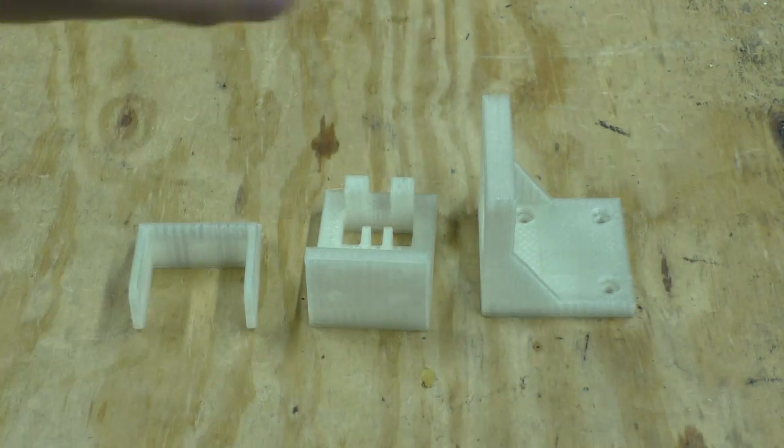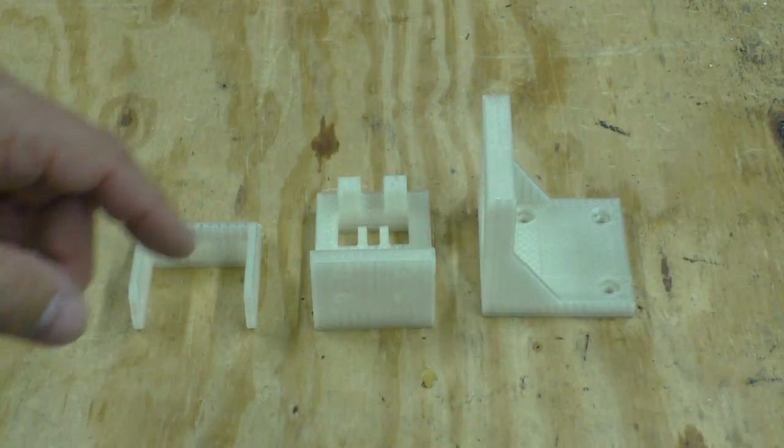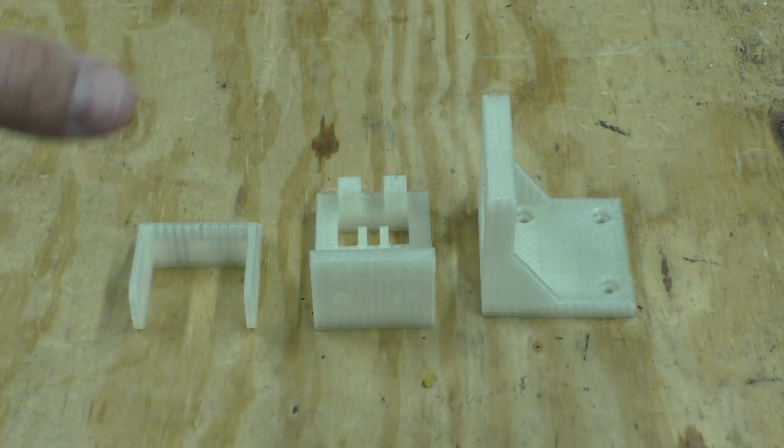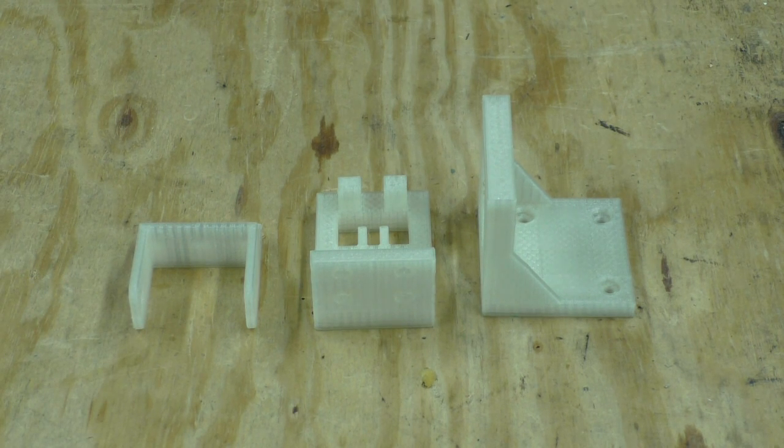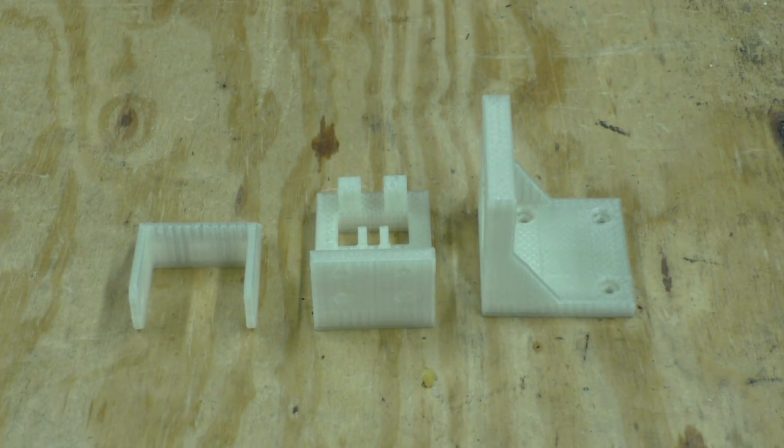And I'll have to assemble them together on the piece of wood that has all of the other components of the filament extruder. So let's take these parts and get this put together and get started.